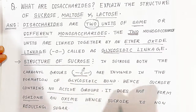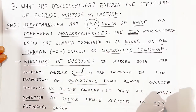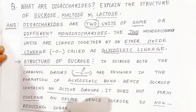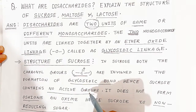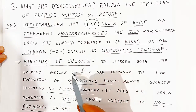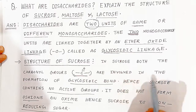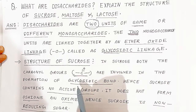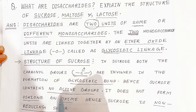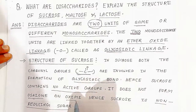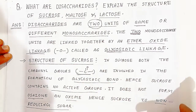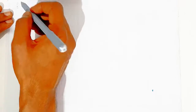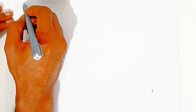Hence sucrose contains no active group — it does not form any osazone or oxime. Therefore sucrose is a non-reducing sugar. Both carbonyl groups present in the monosaccharides are involved in the bonding, leaving no free carbonyl group available.